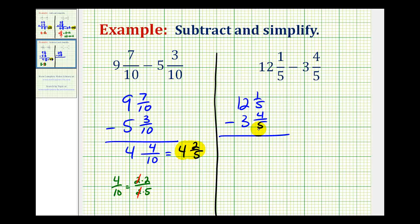Notice how the good news is we already have a like denominator, but we can't subtract 4 fifths from 1 fifth. So we have to borrow 1 from the 12 and add it to 1 fifth.